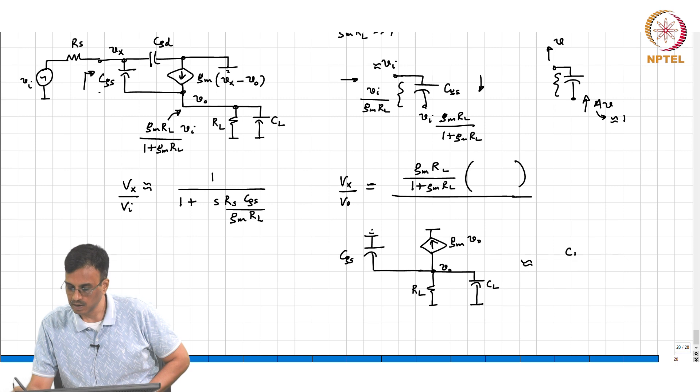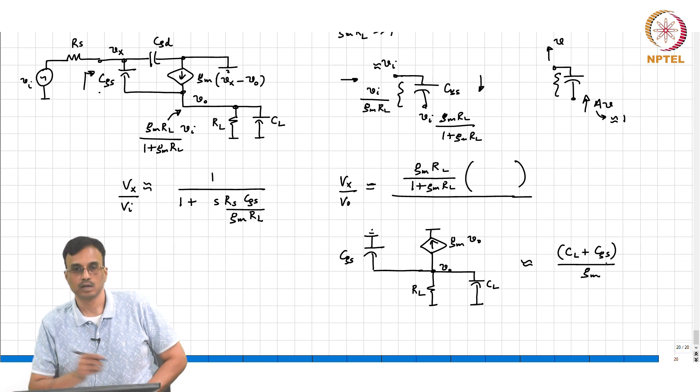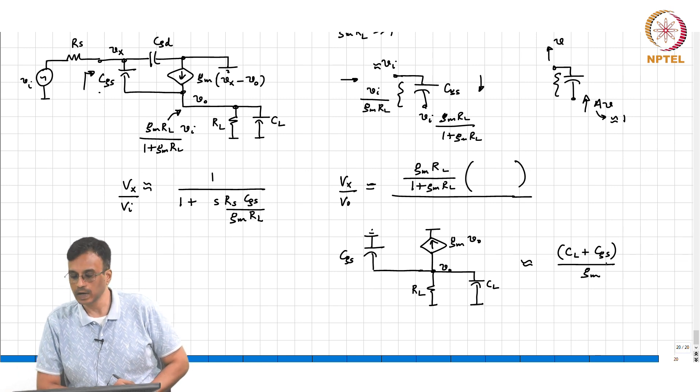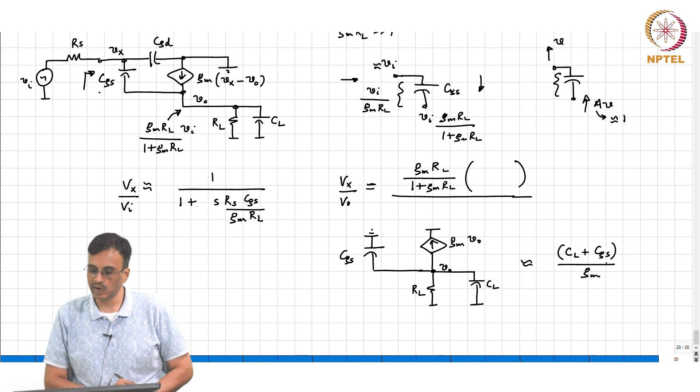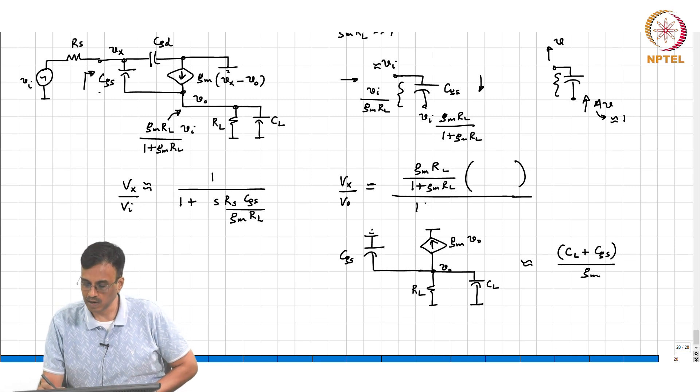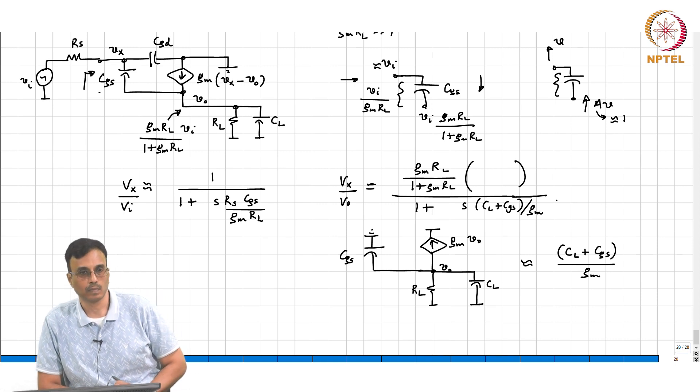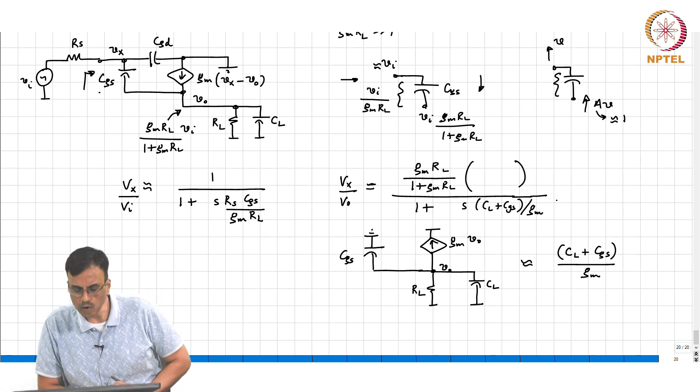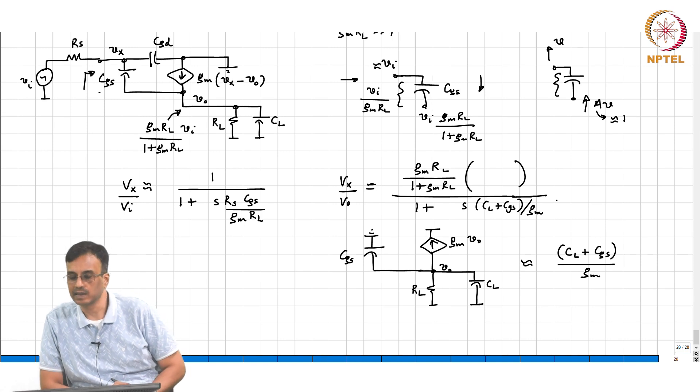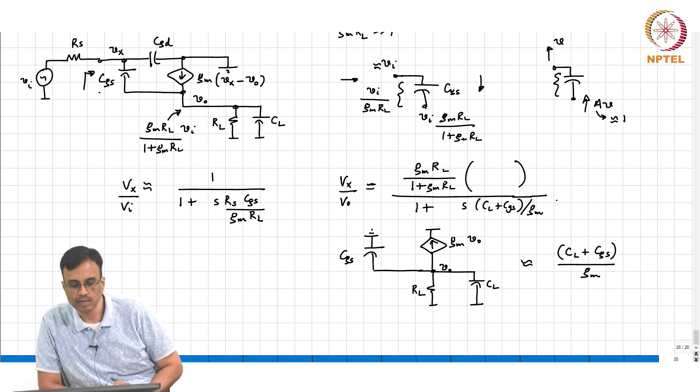CL plus CGS over... Okay. So therefore the pole will be 1 plus S*CL plus CGS over GM*RL. And there will be a zero. I will let you go and calculate the value of the zero.